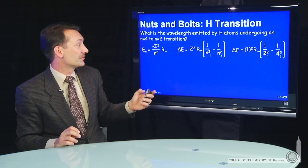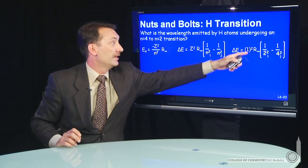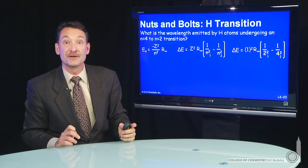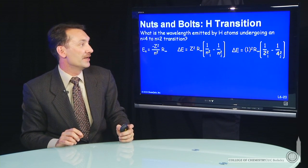We can put in all those numbers. Here's z. We're talking about a hydrogen atom, so the charge on the nucleus, z, is 1.